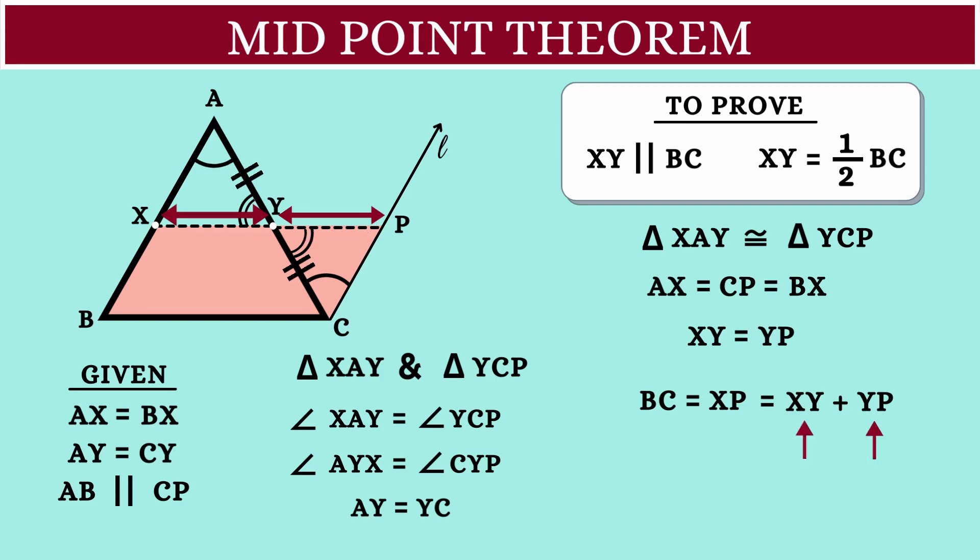Since these two are equal, we can write BC is equal to XY plus XY. This is equal to twice the length of the line XY.